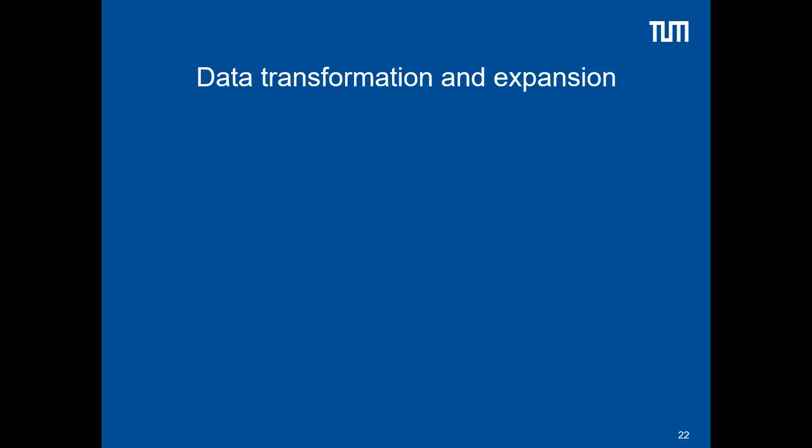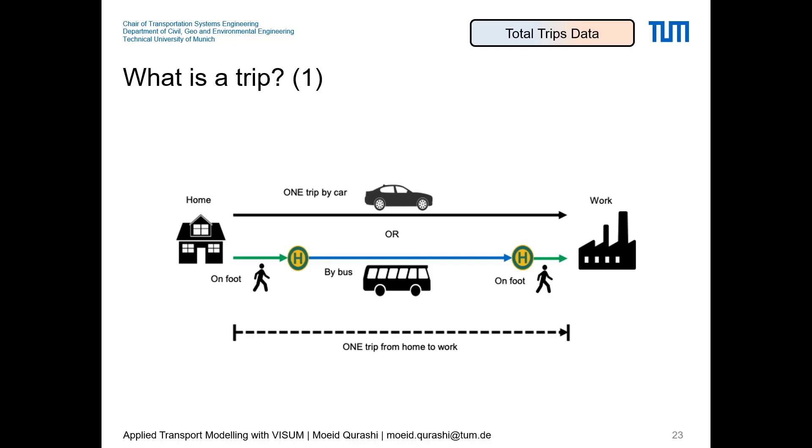Now that we understand the types of data, their collection, and usage in transport modeling — household data, mode choice data, population data — we will look at how these data are directly used in transport modeling, how they are transformed, and how they are expanded from survey samples to represent the full population.